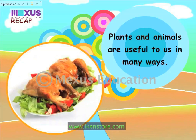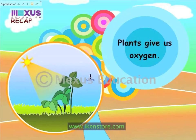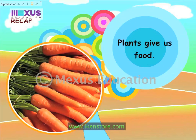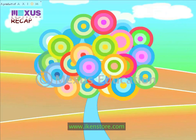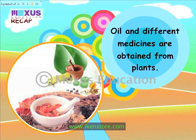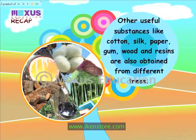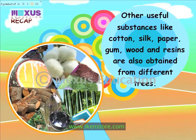Plants and animals are useful to us in many ways. Plants give us oxygen and food. Oil and different medicines are obtained from plants. Other useful substances like cotton, silk, paper, gum, wood and resins are also obtained from different trees.